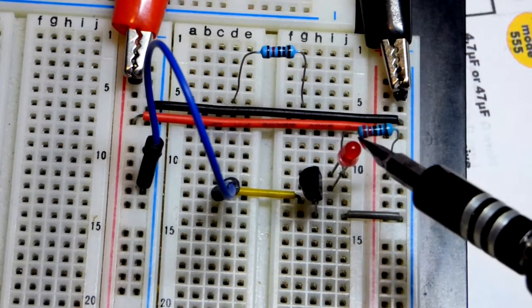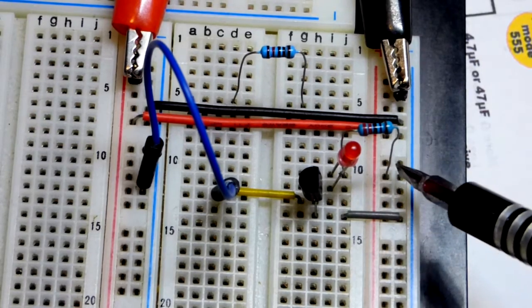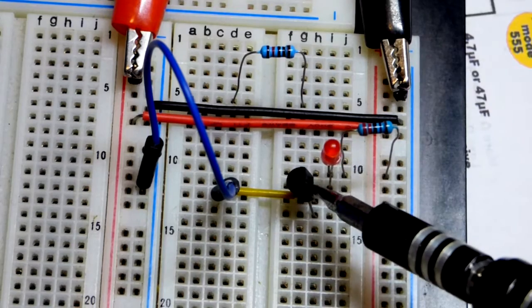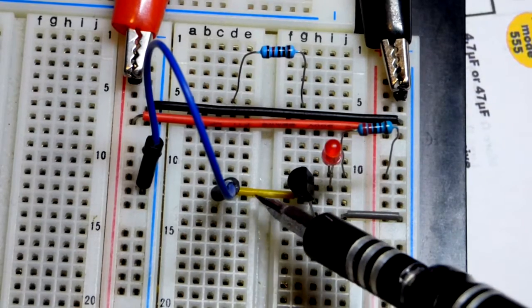And we have an LED right there, long lead the anode to the 220 ohm resistor, positive supply, short lead, the cathode to the drain right there.